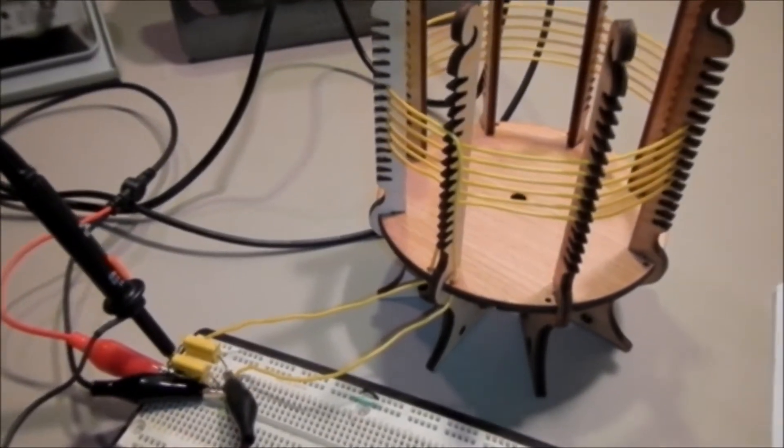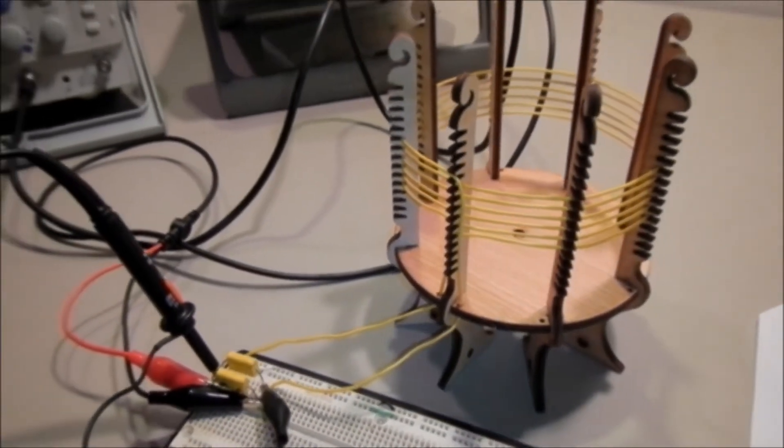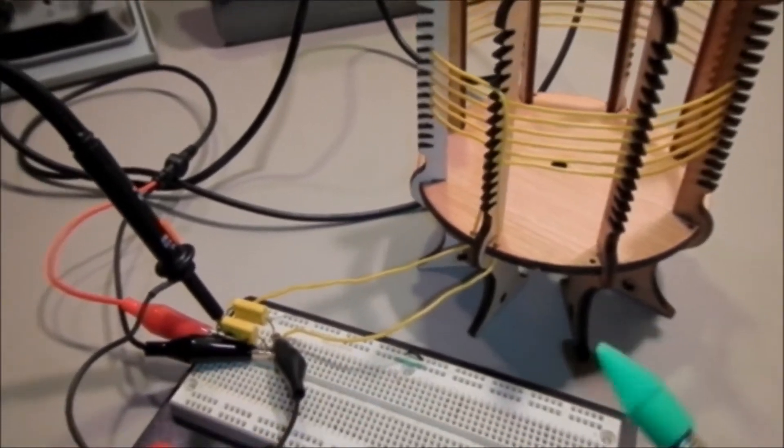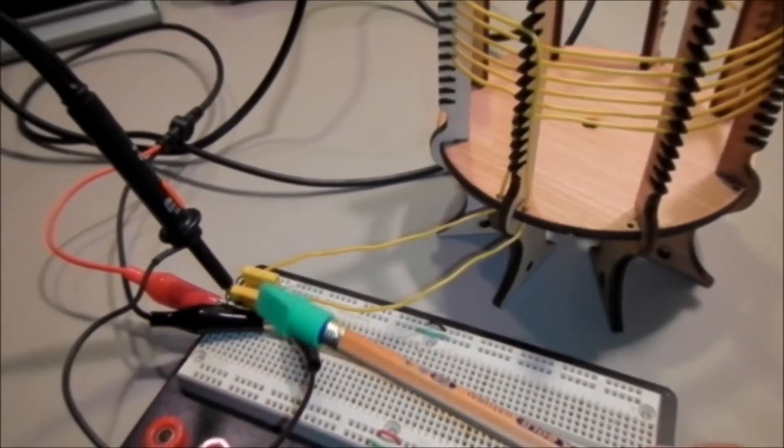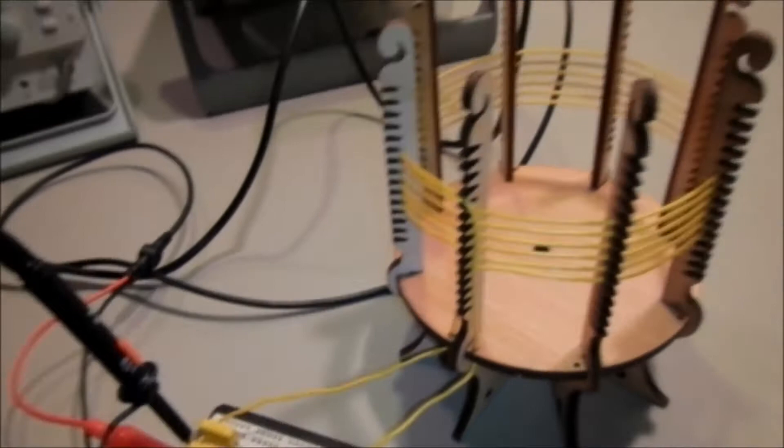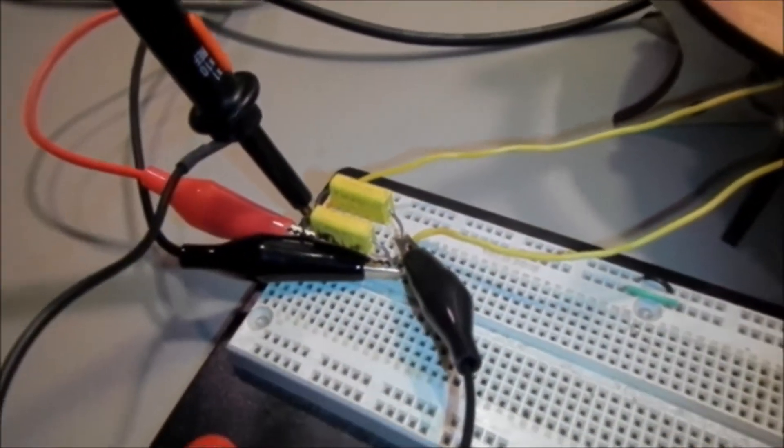All right, the first thing to measure for testing your Tesla coil is this LC resonant circuit. So this is the primary coil and the primary capacitors.